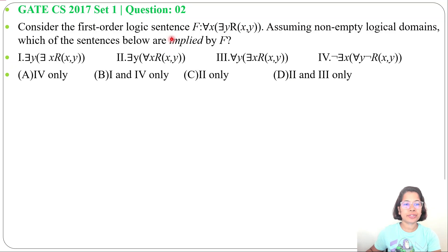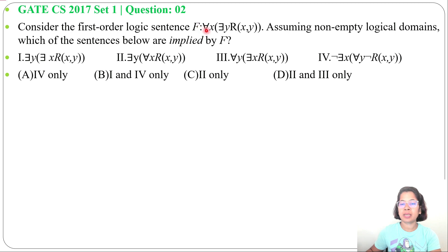Let's talk on a previous question of mathematical logic. This question was asked in GATE CS 2017, Set 1, question number 2. Consider the first order logic sentence F: for all X, there exist Y, R of X, Y.